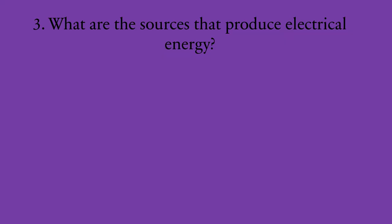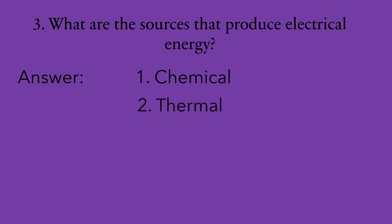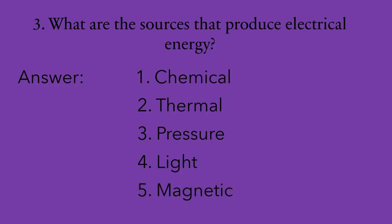Number three: what are the sources that produce electrical energy? There are actually five sources. The examiner sometimes asks for three or four, but it's important to know all five just in case. The first one is chemical, like a lead-acid battery. The second is thermal, like a thermocouple. The third is pressure, like a transducer. The fourth is light, like solar panels. And the final one is magnetic, like generators and alternators inducing current.